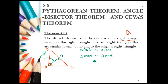These two triangles are also similar to the original triangle ABC. So triangle ADB is similar to triangle ABC, and triangle ACD is also similar to triangle ABC.